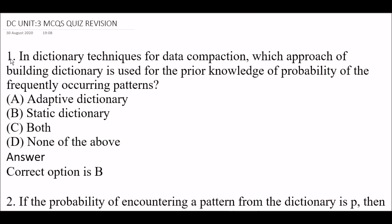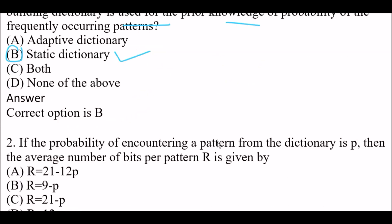First question: In dictionary techniques for data compaction, which approach of building a dictionary is used for prior knowledge of probability of the frequently occurring patterns? Option A: Adaptive dictionary. Option B: Static dictionary. Option C: Both. Option D: None of the above. The right answer is Option B — Static dictionary. In dictionary techniques for data compaction, the static dictionary approach is used for prior knowledge of probability of frequently occurring patterns.